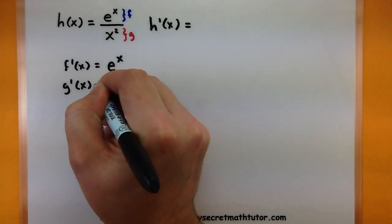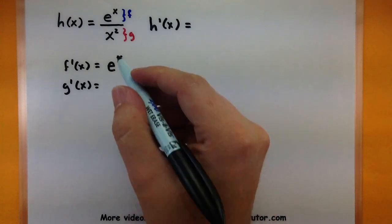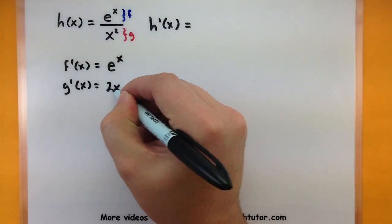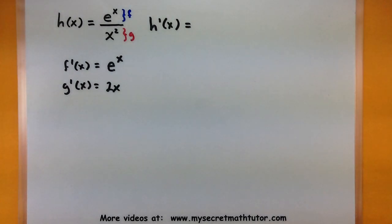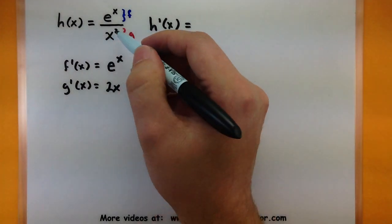Now, on to the derivative of the bottom. So the derivative of x squared would be 2x. So you can see I'm really just using the power rule for this one.